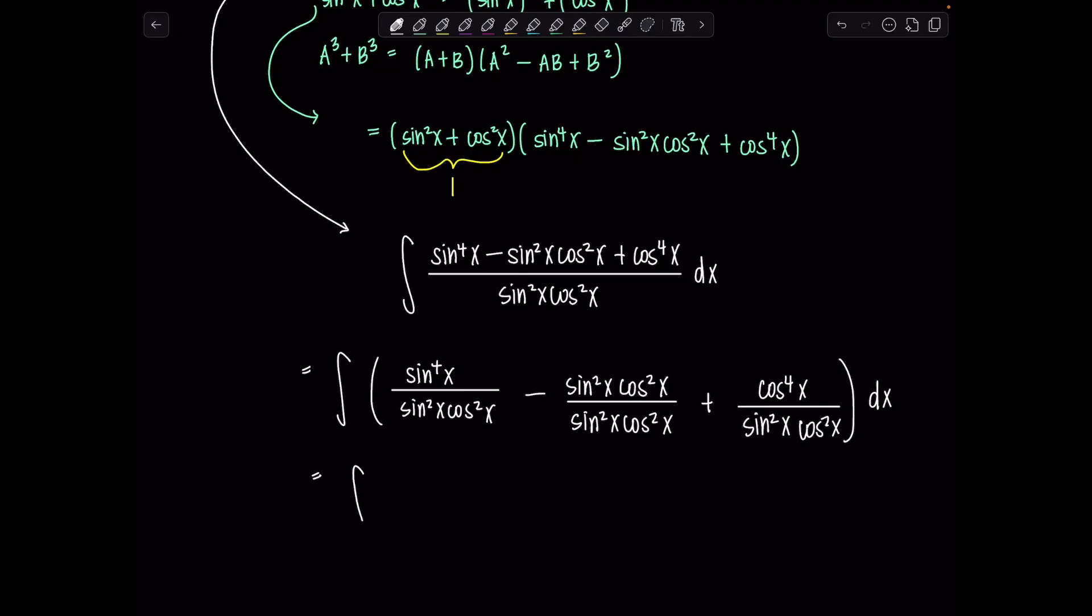From here we can simplify. We'll have sin²x over cos²x since this sin² cancels out. And then this is just going to be one. Love it. Plus, oh yeah, cos² is gone. This is now a two. So we've got cos²x over sin²x.